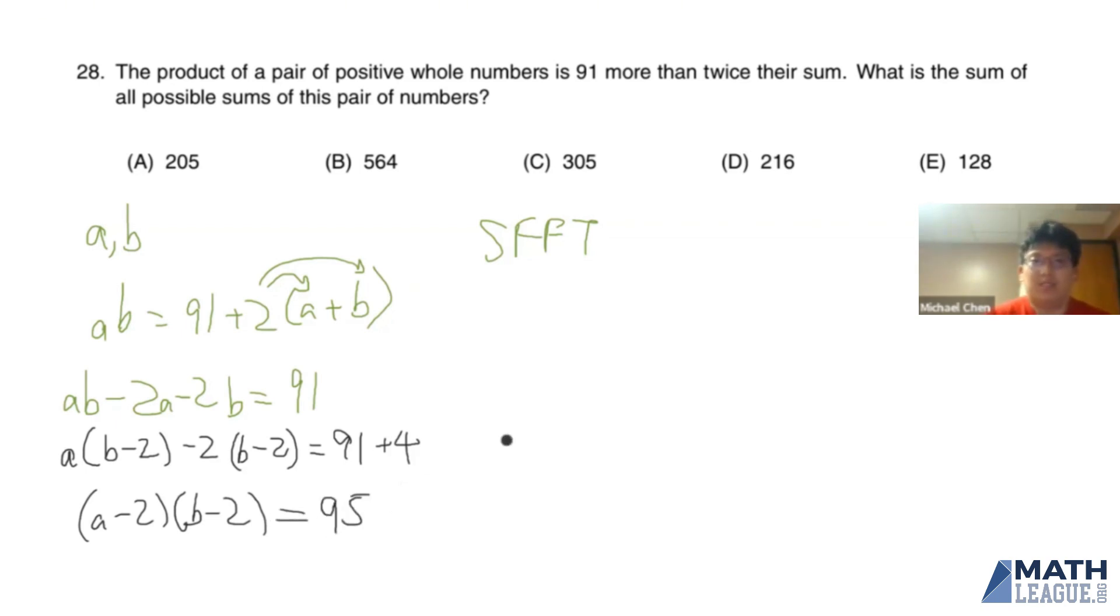And looking at this, we can now see that A minus 2 and B minus 2 have to be a factor pair of the number 95. And we can note that it also has to be a positive factor pair. Because if we have negative numbers, then the only pairs possible are negative 1 and negative 95, or negative 5 and negative 19, both of which would result in a negative value for at least one of A and B.